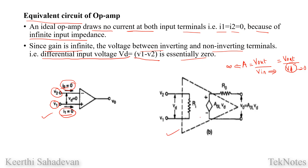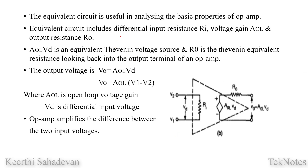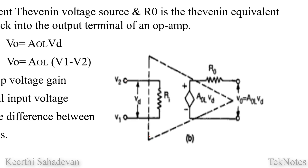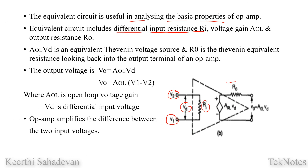Practically, you will have a resistor in the equivalent circuit. The equivalent circuit is useful in analyzing the basic properties of op-amp. In this circuit, we check the diagram. V2, V1, and the non-inverting terminal are shown. VD is the differential input voltage. Ri is the input resistance — the differential input resistance.